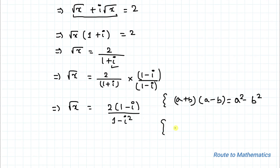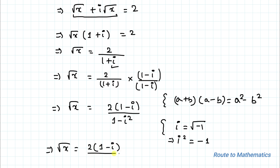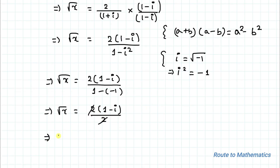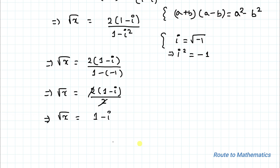We know that iota equals root of minus 1, so iota squared is minus 1. This implies root x equals 2(1 minus iota) divided by 1 minus (minus 1), which gives root x equals 2(1 minus iota) divided by 2. Therefore root x equals 1 minus iota.